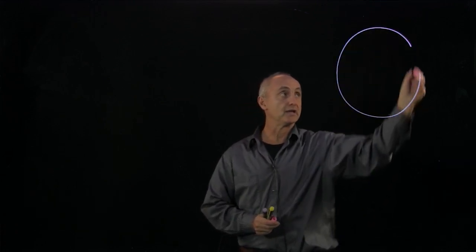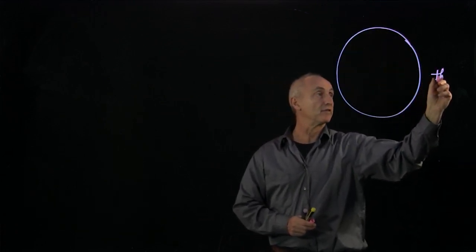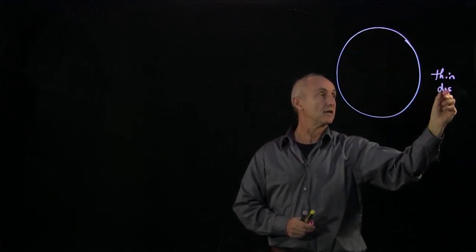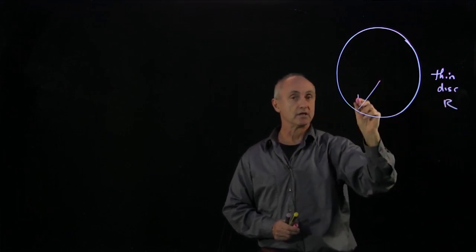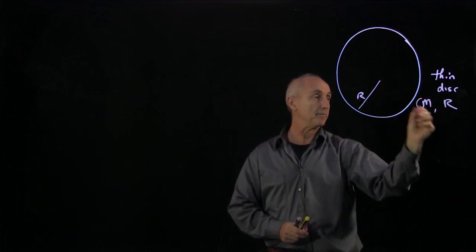I would now like to calculate the moment of inertia for a very thin disk. So we have a thin disk, and the radius of that disk is r, and it has a mass m.